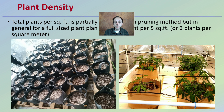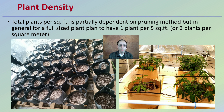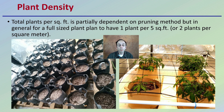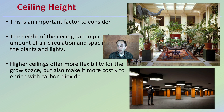We also have plant density to consider. Total plants per square foot is partially dependent on the pruning method, but in general for a full-size plant, you want to plan for one plant per five square feet, or two plants per every square meter, to give you a general idea of what your plant density should be.